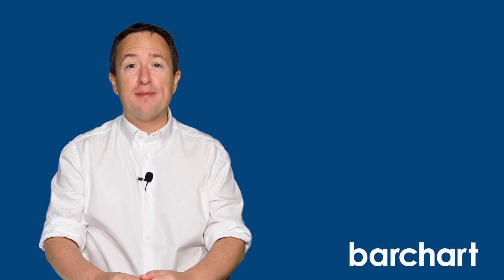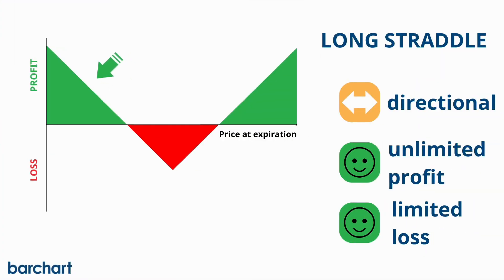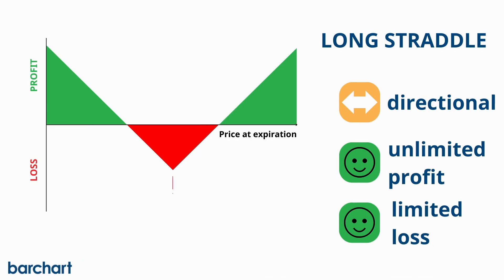In fact, the maximum profit on the downside happens if the asset price goes to zero, though this is highly unlikely under most circumstances. The maximum loss happens if the asset's price trades precisely at the strike price at expiration, which means both options expire worthless. The loss is limited to the premium paid to buy the call and the put.